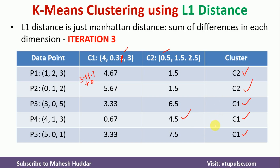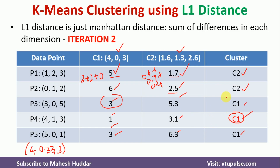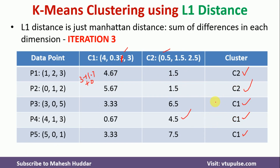Comparing the cluster assignments from the second and third iterations, there is no change. This means the clusters have converged — no data points are moving from one cluster to another. Hence, we stop here. The final cluster assignments are: P1 and P2 belong to the second cluster, and P3, P4, and P5 belong to the first cluster.